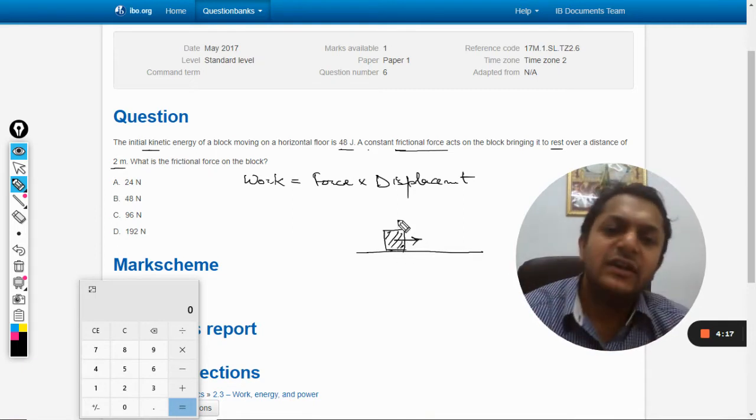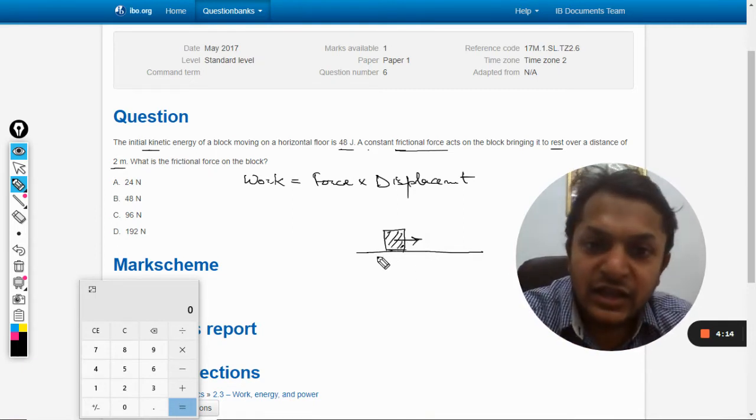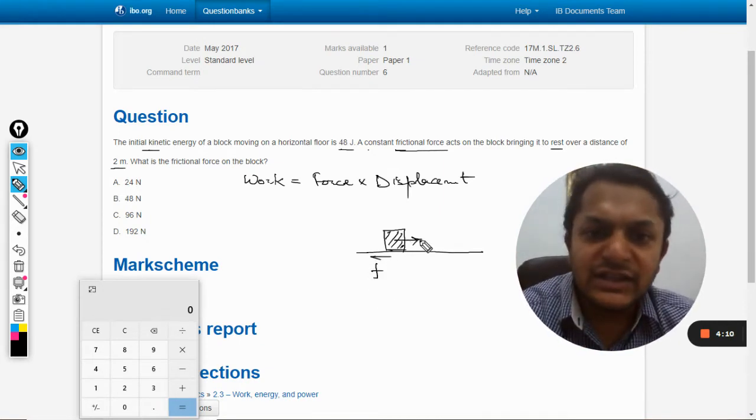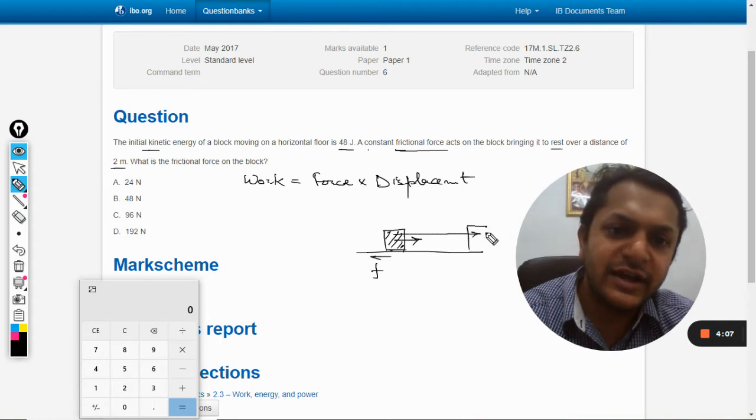In this case, the body is moving towards the right. Let's say the frictional force is acting towards the left, but the displacement is taking place in the right direction.